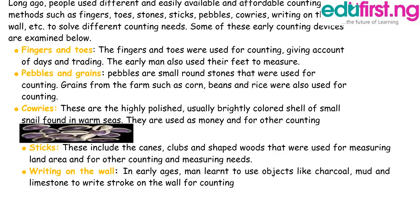Cowries. These are highly polished, usually brightly colored shells or small snails found in the warm seas. They are used as money and for other counting needs.